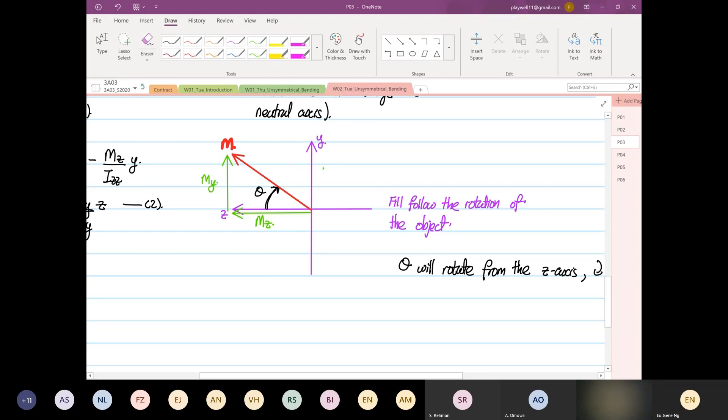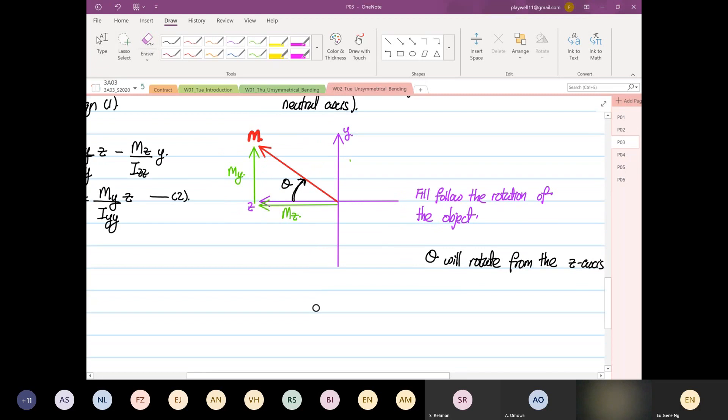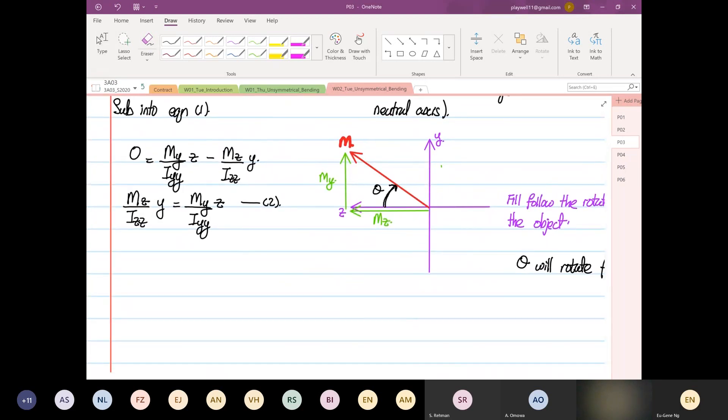And then we have a relationship that we can form later on. So I'll come back to this diagram later on that we have just drawn. So from here, if we look at equation two, we look at equation two, if we were to rearrange them, you can have Y over Z.